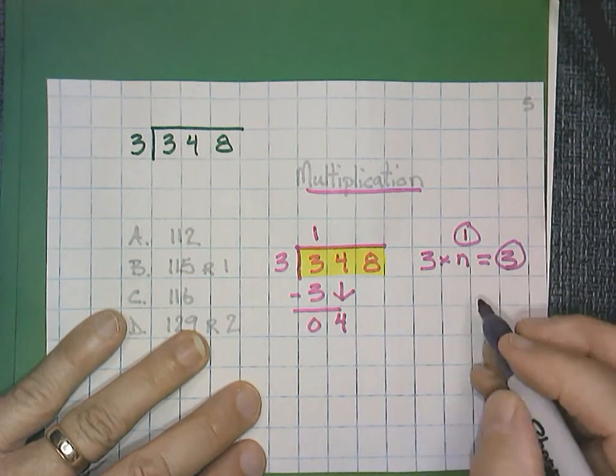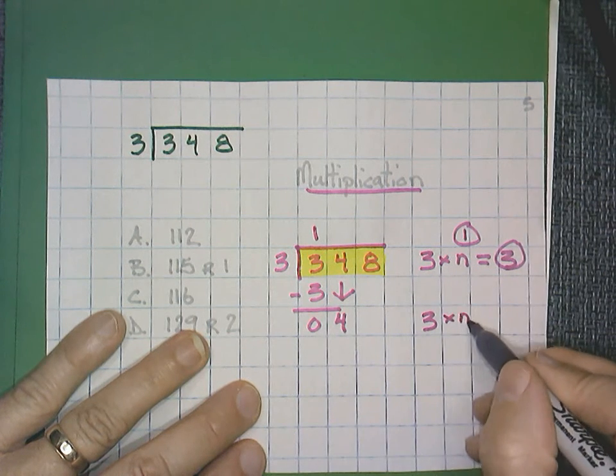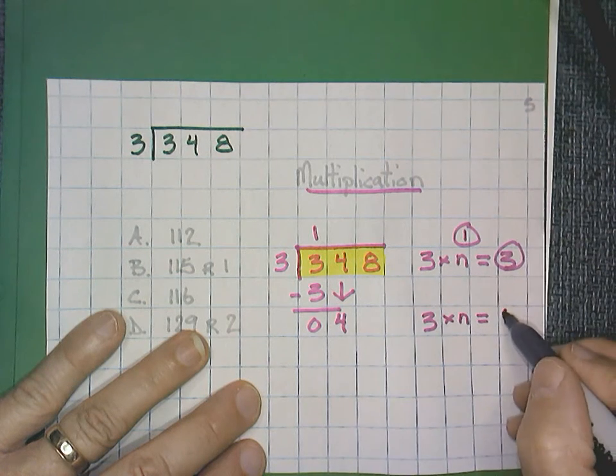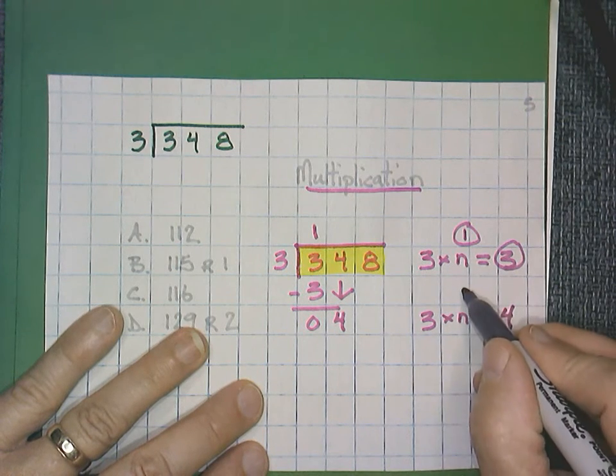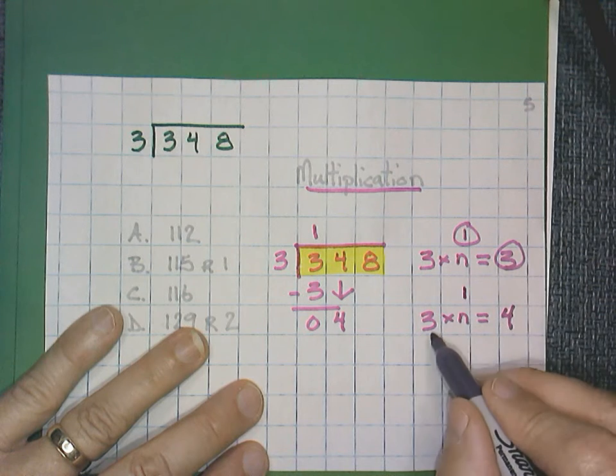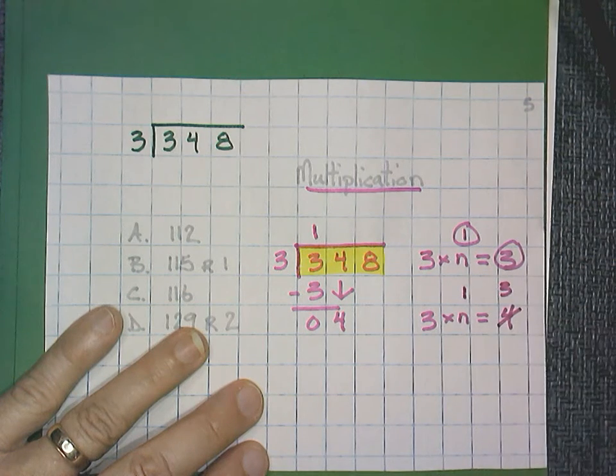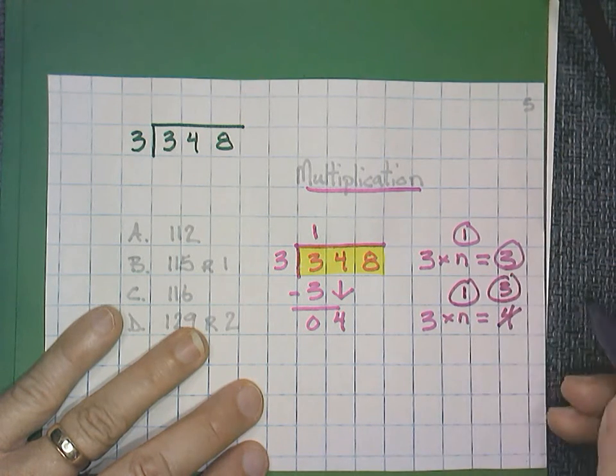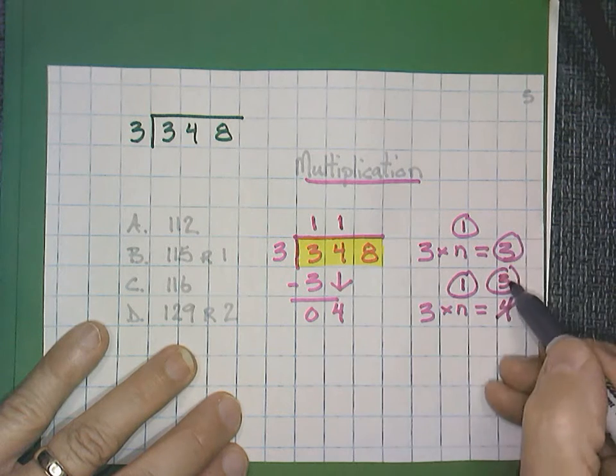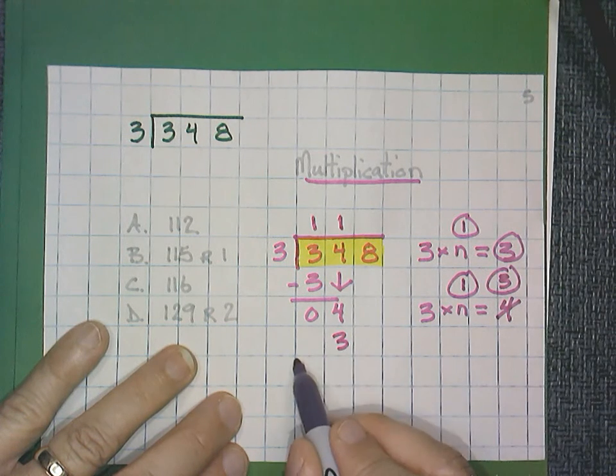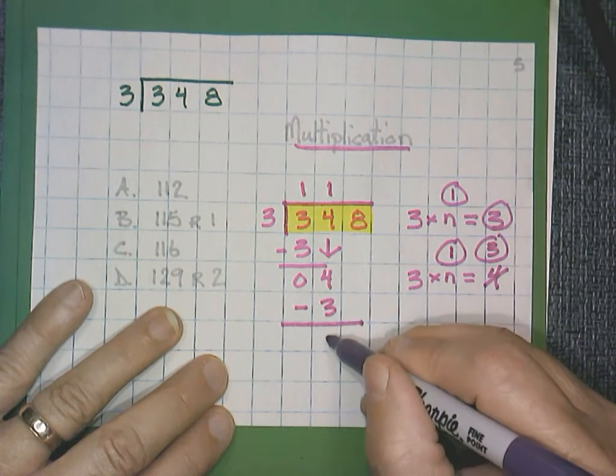Now we have 4 divided by 3. Let's use our equation again. 3 times n equals 4. And I'm going to solve for n. Well, 3 times the best I can do again is 1. But 3 times 1 is not 4. It's actually 3. We learned that up here. So let's cross out the 4. I'm going to circle both of these numbers. And once again, I'm going to use both these numbers. The 1 goes up here. And the 3 goes there. Then I subtract. 4 minus 3 is 1.